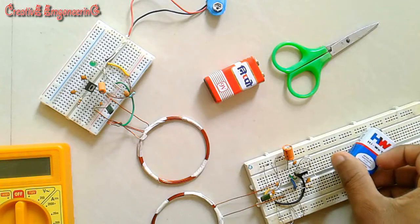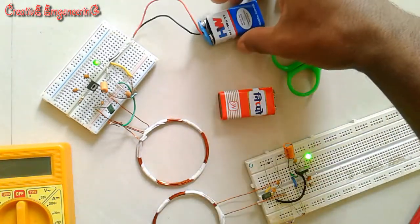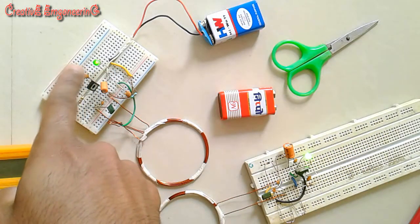First, I connect the 9V battery to the transmitter section. You see, the transmitter LED indicates the input power.